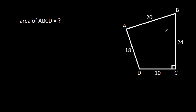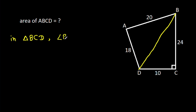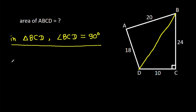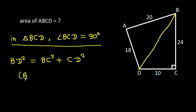If we join BD, then in triangle BCD, angle BCD is 90 degrees. So BD² will be equal to BC² plus CD² by the Pythagorean theorem.